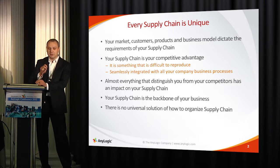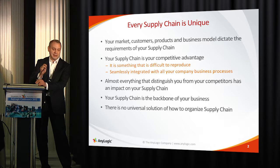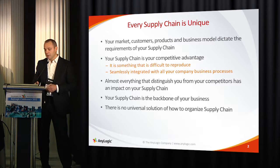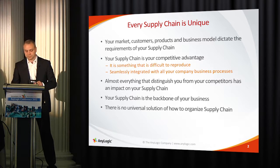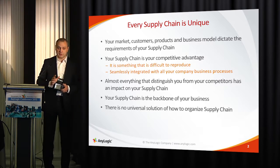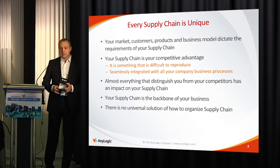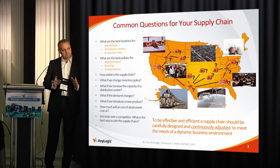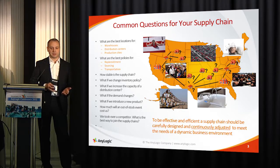In many cases — probably most of the ones we were dealing with — the cost of the supply chain is higher than the cost of production of the products. And that's why there is no universal solution for how to organize a supply chain. These are common questions you have to address when you design it: where to put new facilities — warehouses, distribution centers, manufacturing sites, cross-docks, and so on.